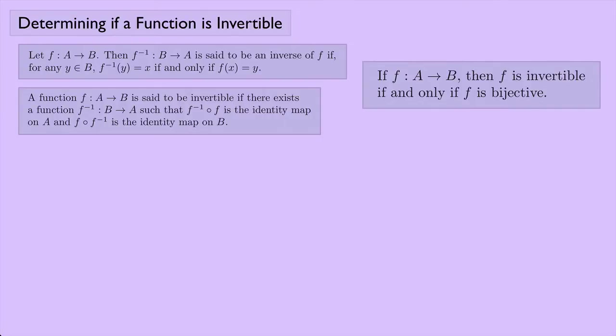The thing we're trying to prove is: if F is a function from set A to set B, then F is invertible if and only if F is bijective. Since we have the if-and-only-if, we have to go in both directions. First, let's look at the forward direction — if F is invertible, then F is bijective.